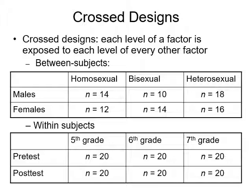Notice our Ns are the same — 20 in each condition — and every time that N represents the same people. The exact same people were pre-tested in fifth grade, and two years later at the end of seventh grade, those same people were tested again. So this would be a cross-design: each level of a factor is exposed to each level of every other factor. It's the same people.